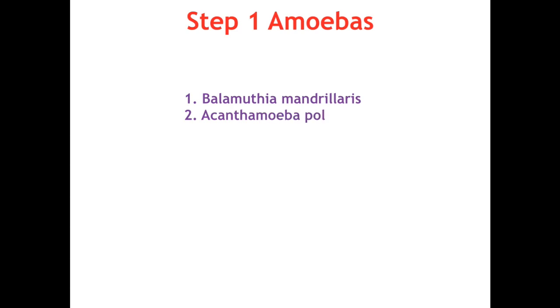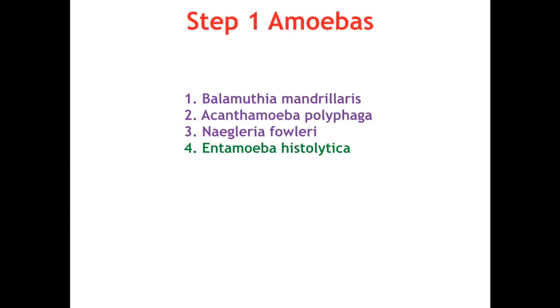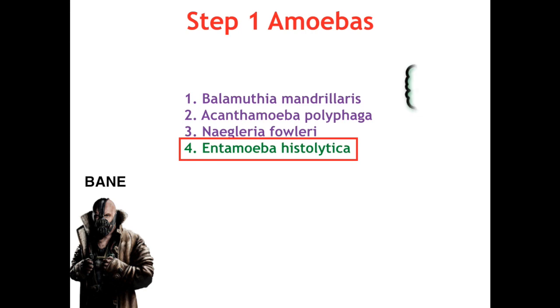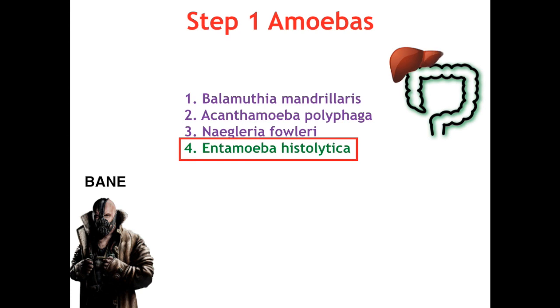Let's start off with the names of all the amoebas covered on Step 1, starting with Balamuthia mandrillaris, Acanthamoeba polyphaga, Naegleria fowleri, and Entamoeba histolytica. We can remember these with the mnemonic BANE — both from Batman and the fact that they are the bane of our existence, as they're very hard to diagnose and even harder to treat. Today we will be focusing on the GIT amoeba, Entamoeba histolytica, which mainly afflicts the large intestine and liver.